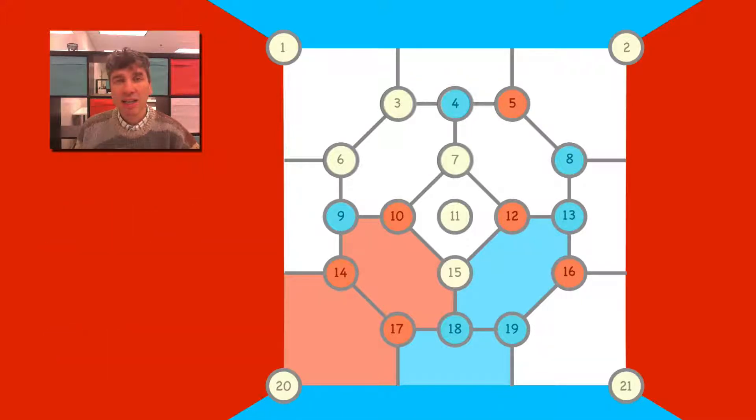The objective of the game is to link up the lower to the upper part of the board for blue, and from the left to the right for red. Here, blue has won the game.